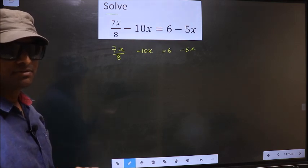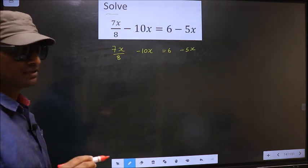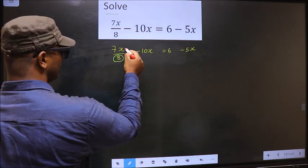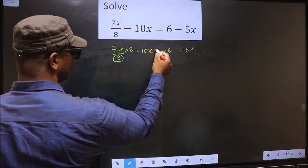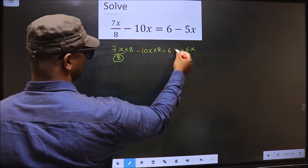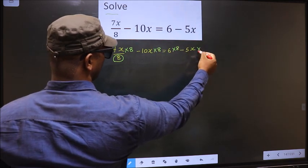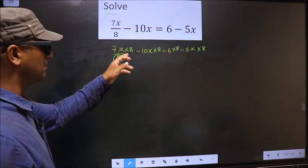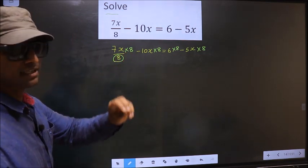For that, first we should get rid of the denominator. So to remove 8 from the denominator, we should multiply by 8 to each term.